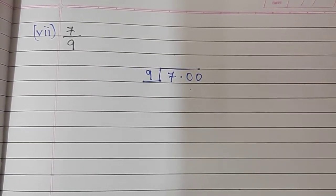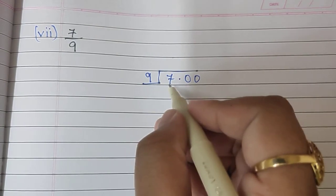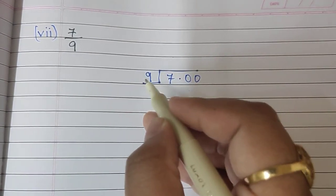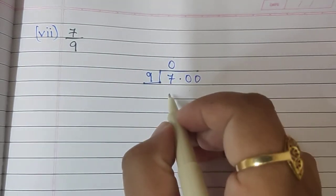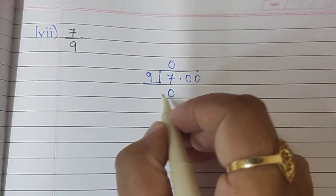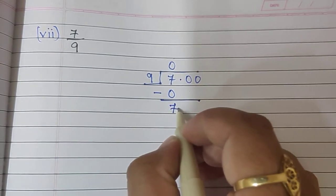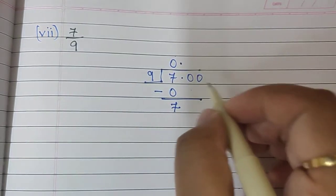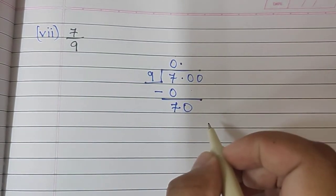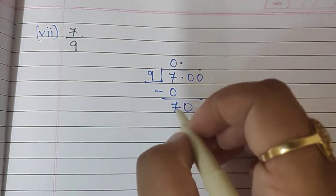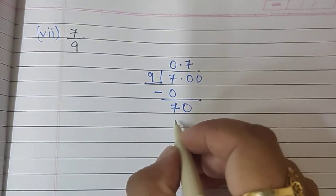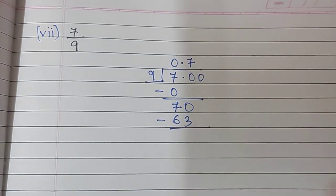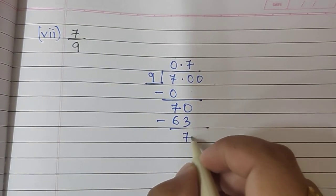7 upon 9. 9 is written out and 7 is written inside. Again, here 7 is smaller than 9. So, what we will do is, we will write a 0 here. 9 zeros are 0 minus, so the answer is 7. We will put a decimal sign here. Take the 0 down. This becomes 70, 9, 7's are 63. If we subtract, we get the answer. Again, 7.